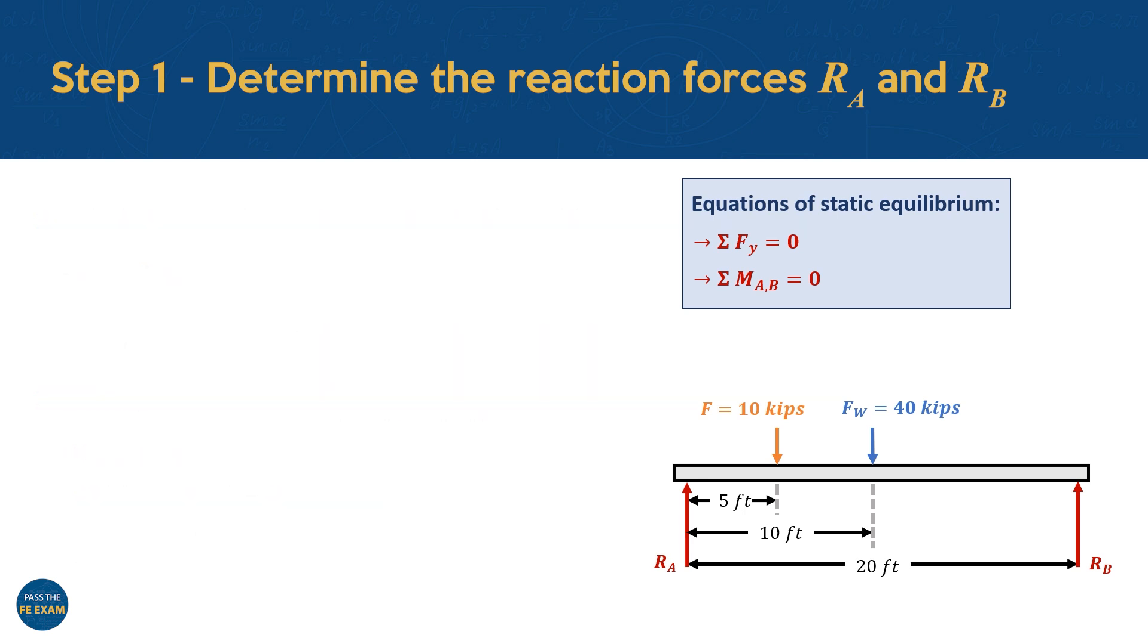Now, with the reaction RB known, we can go ahead and calculate RA. We do this by applying the equation for vertical force equilibrium, taking an upward force as positive. Looking at our beam, we see that both reaction forces RA and RB are acting in the upward or positive direction, while the applied loads act in the negative direction. This means our equilibrium equation can be defined as RA negative F negative FW plus RB is equal to zero. We can then substitute the values for each of these variables and rearrange our equation to solve for RA. From this, we find that the reaction force RA has a magnitude of 27.5 kips.